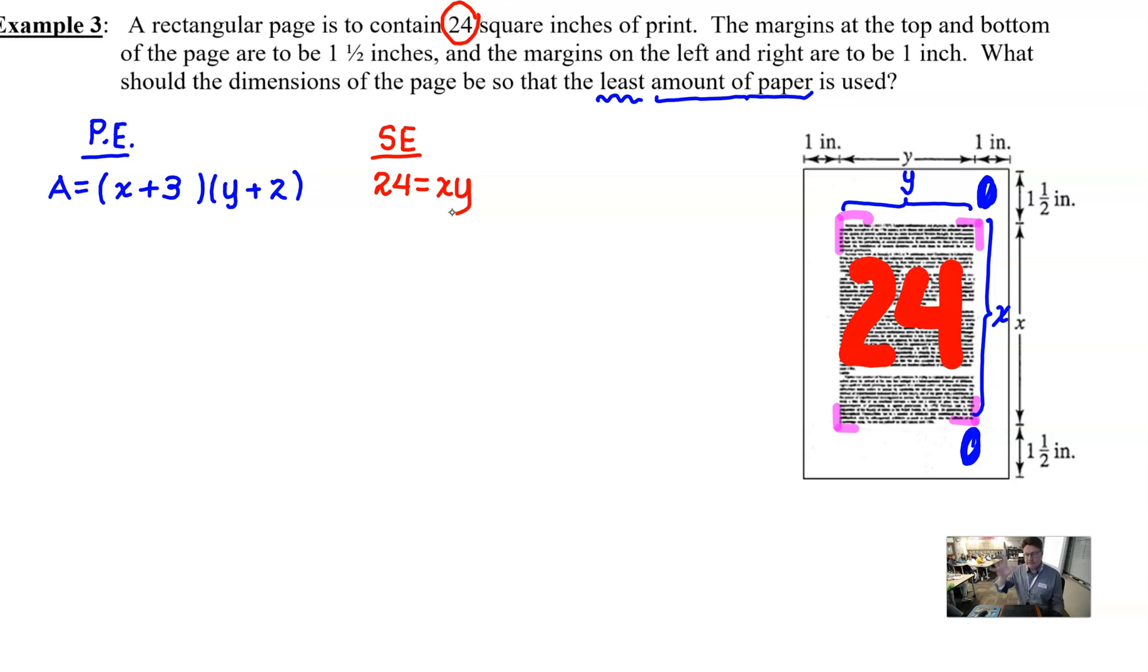Now before we move on, I wanted to ask, could a student have begun this problem by letting the entire page have a length of y and a width of x? That's probably one of the ways I would have thought about it. And so your primary equation here would be x times y. Would that work? Yeah. As long as the secondary equation would have subtractions of 3 and 2 for the x and the y. So it's like either we're going to have an ugly primary or an ugly secondary equation, however you decide to set it up. We're going to go ahead and stick with what we've got right here.